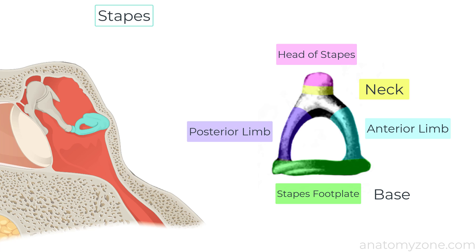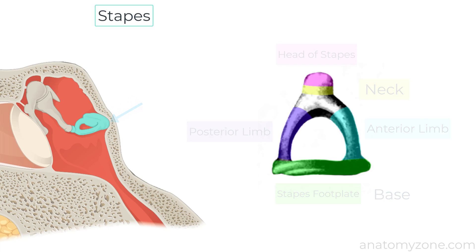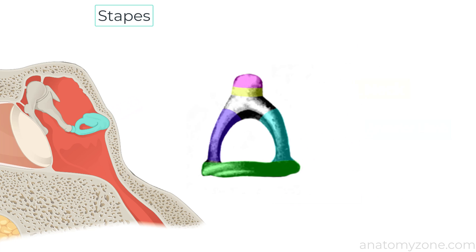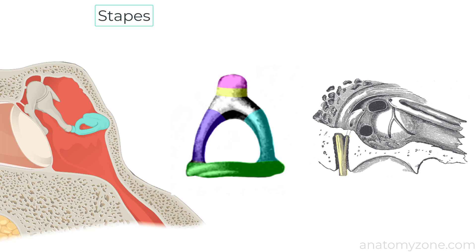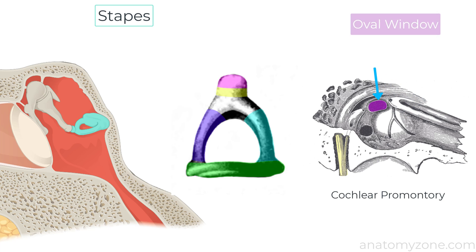The base or stapes foot plate attaches to the oval window on the medial wall of the middle ear. In this diagram we're looking face on at the cochlear promontory. This is the oval window superiorly where the foot plate of the stapes attaches, and the round window is shown inferiorly here.